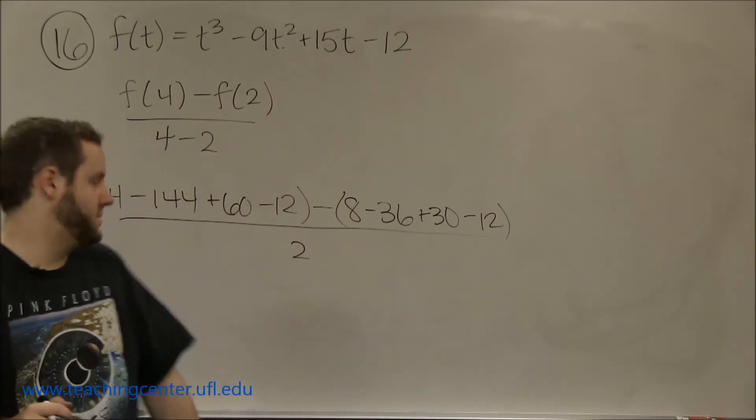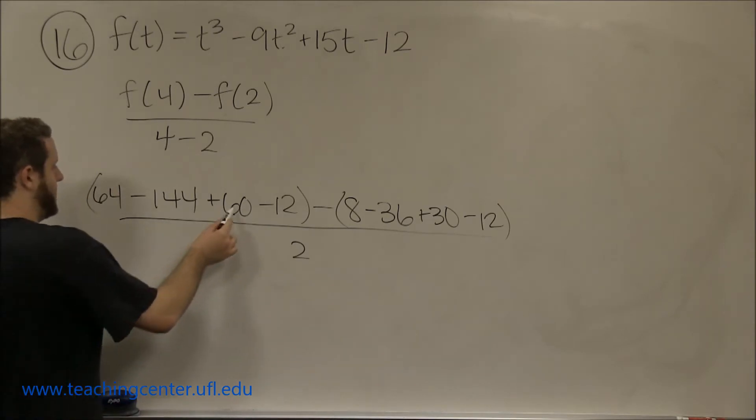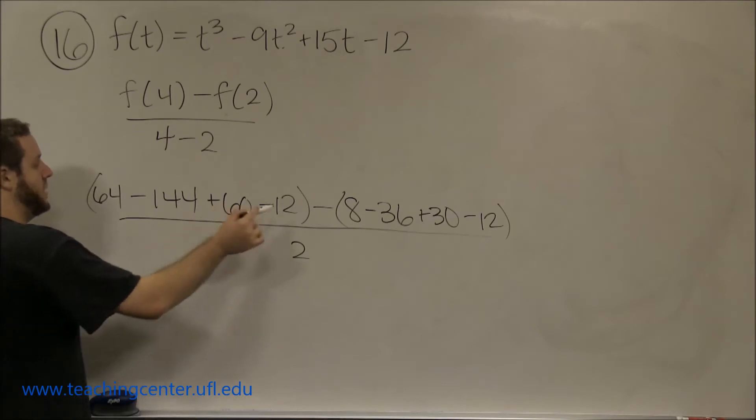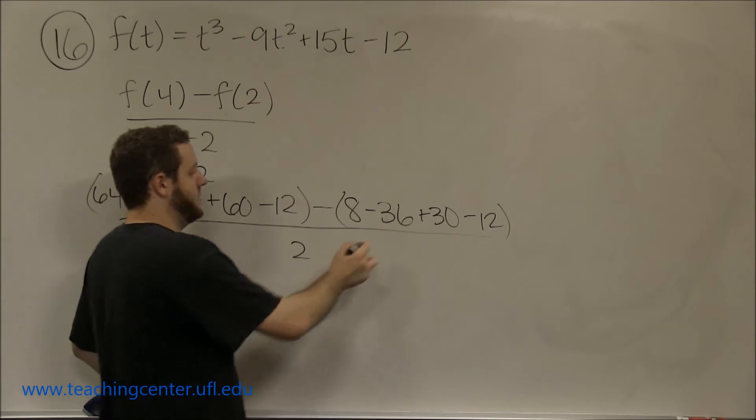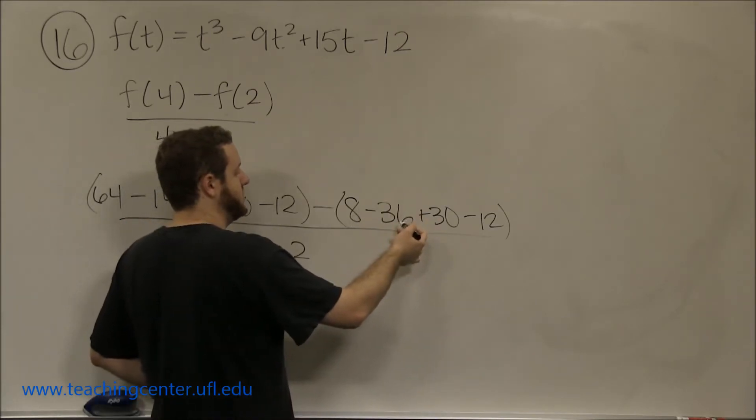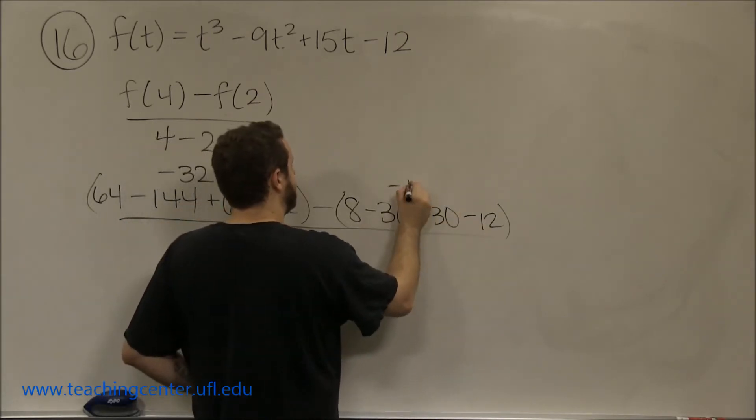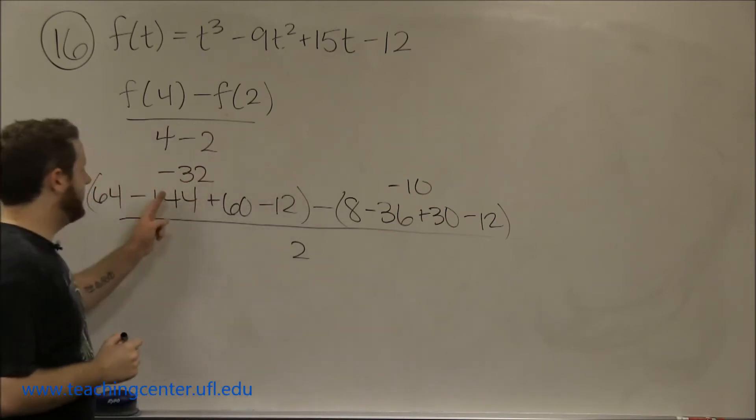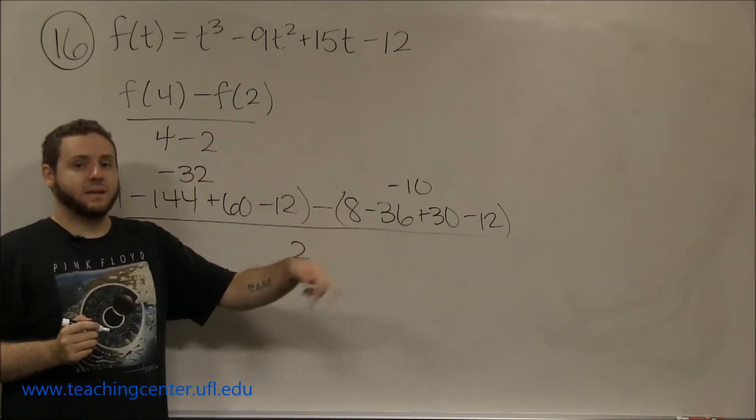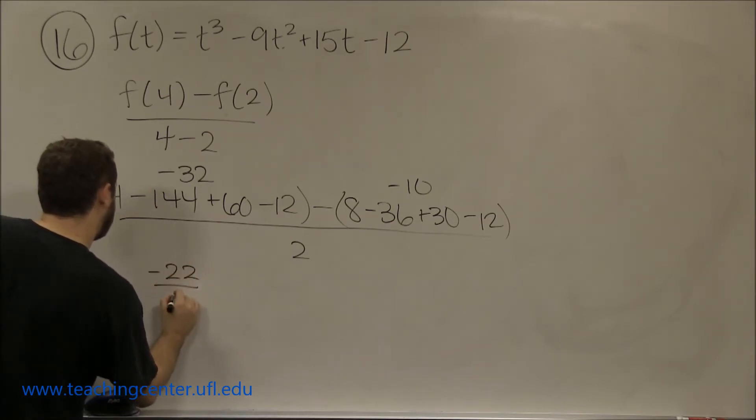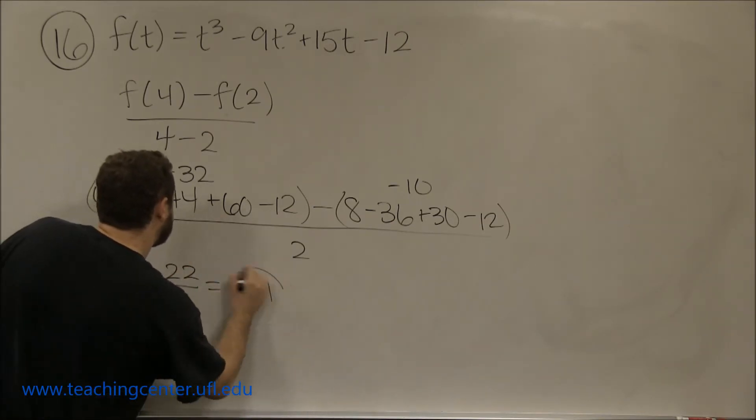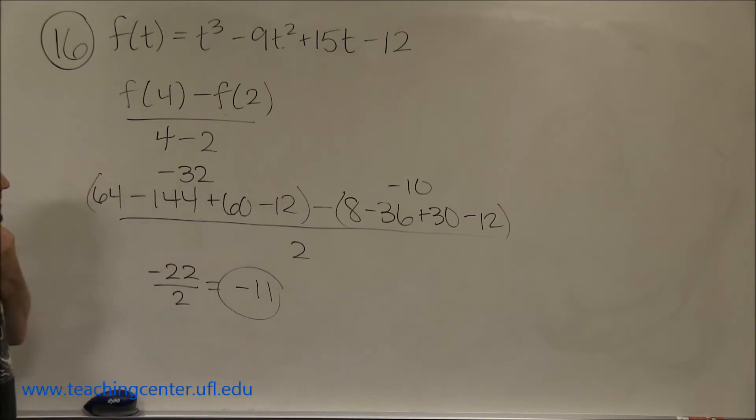That's all divided by 4 minus 2 which is 2. Here we get 124 minus 144 is negative 20 minus 12, so this value is negative 32. And here we get 38 minus 36 which is 2, minus 12 is negative 10. So negative 32 minus negative 10 gives us negative 22 over 2, which is negative 11. Our average rate of change is negative 11.